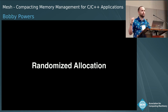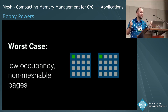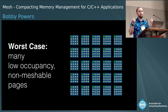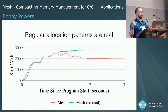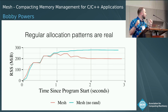Now that we have a mechanism for compaction, it's easy to imagine worst-case scenarios. You could imagine a case where we have many low-occupancy pages that are not meshable because they have one or several objects at the same offsets, so we would not be able to reclaim any memory. We're actually able to demonstrate in our paper a simple Ruby program using functional programming idioms that generates regular allocation patterns like this.